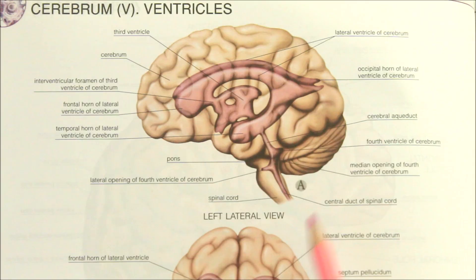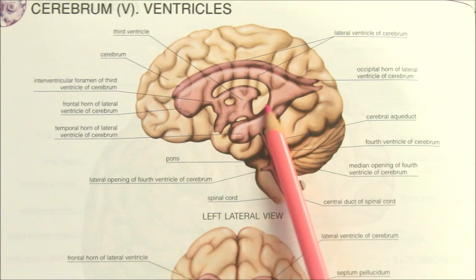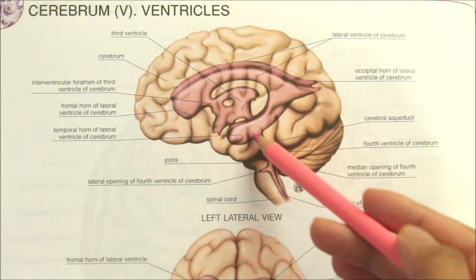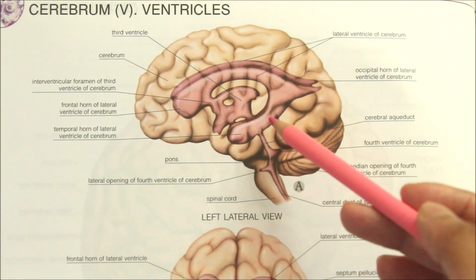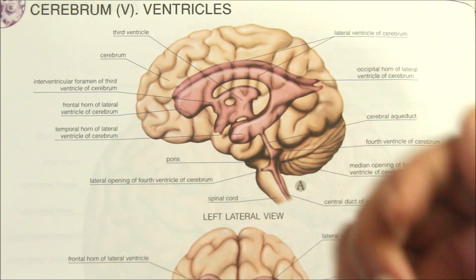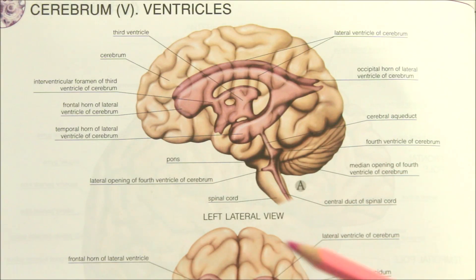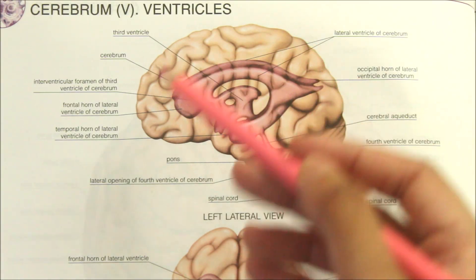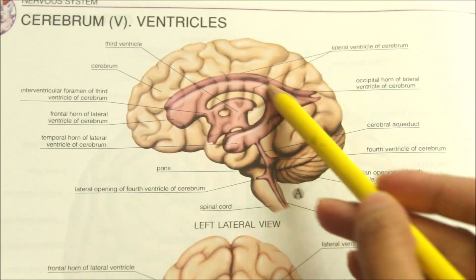Hello friends and welcome to my channel. In this video we will be learning about the lateral ventricle. This is a left lateral view of the cerebrum showing the ventricles of the brain. The ventricles are a set of communicating cavities within the brain, responsible for the production, transport and removal of cerebrospinal fluid which bathes the central nervous system.